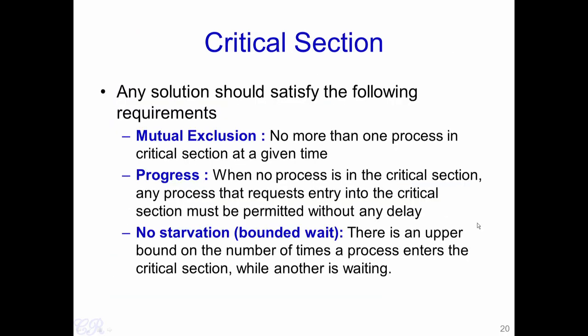Any solution for the critical section problem must satisfy three requirements: mutual exclusion, progress, and no starvation (bounded wait). Mutual exclusion ensures no more than one process is in the critical section at a given time. Progress ensures that when no process is in the critical section, any process requesting entry must be permitted without delay. Bounded wait means there is an upper bound on the number of times a process enters the critical section while another is waiting — a process should not wait infinitely long to gain access.